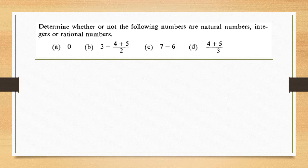Let us see a very simple example. Determine whether or not the following numbers are natural numbers, integers, or rational numbers. Consider what you think about each number and what you obtain when you apply the relevant classification.